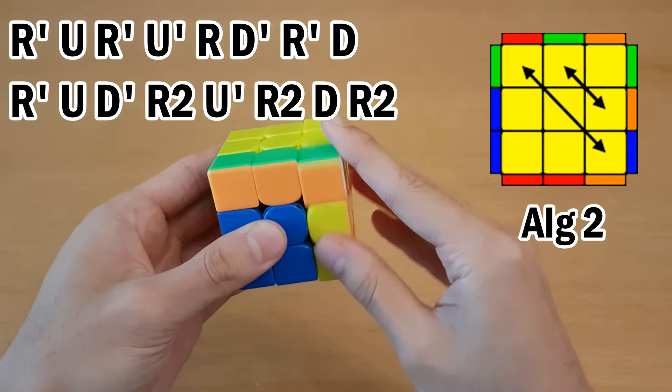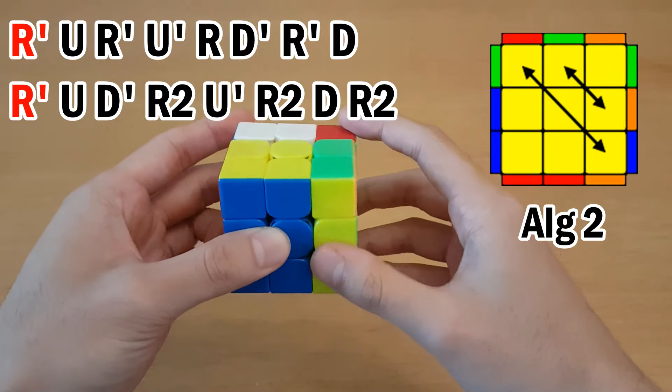Also, because it starts the same way, it has that re-grip in the beginning as well. And then here we have one re-grip as well, but a very small one.